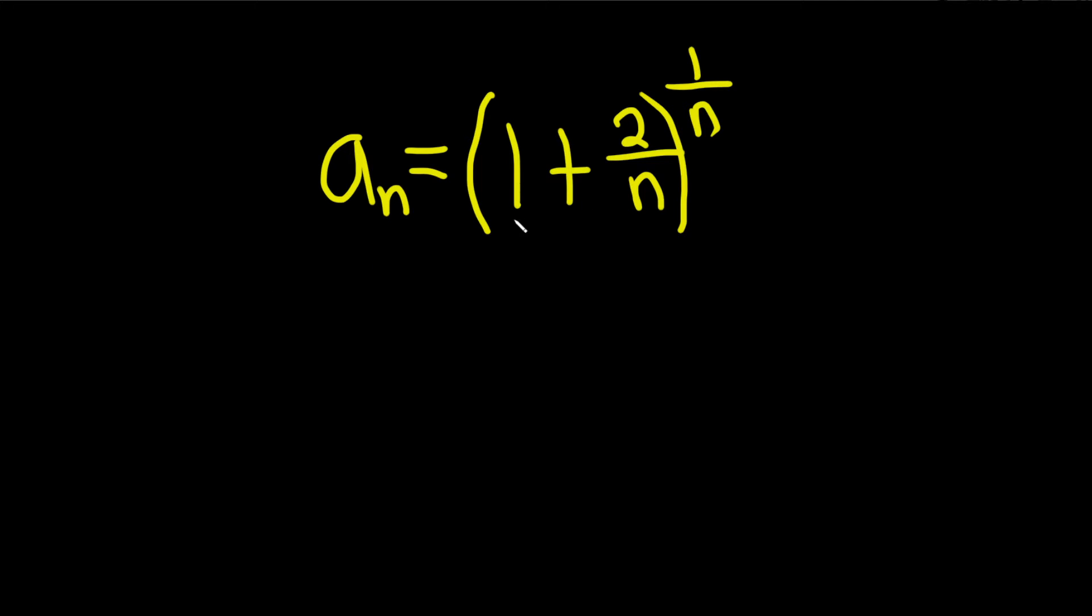So let's start by taking the limit. Now to take this limit, we're going to use log because see there's an n here and there's one here. So it's a good strategy to try to bring this down. And so in order to bring it down, you take the log. So let's take the log of both sides like this. It's a popular strategy.